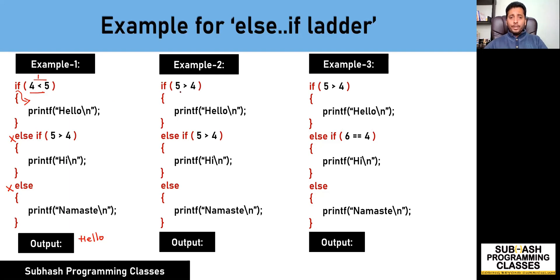In example 2, is 5 greater than 4? That is false — resulting in a zero value. So the if block is skipped, and the control comes to the else-if condition. It checks: is 5 greater than 4? Yes — this results in a true value, so the program control enters the else-if block and prints 'hi'. The rest of the blocks are ignored, and the output is 'hi'.